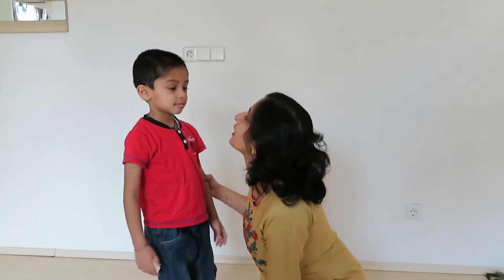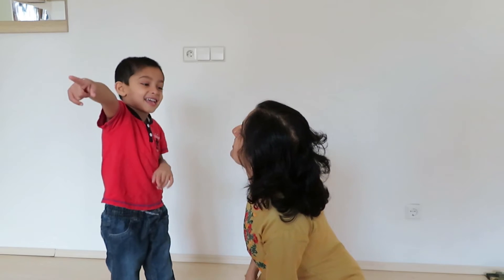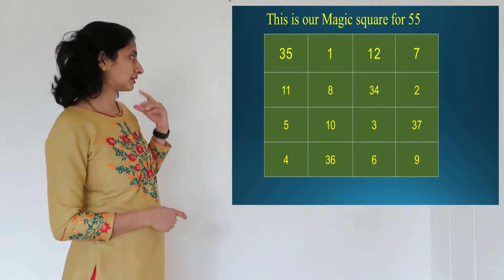Let me take one example. Which number shall I take? Okay, I will ask my son for a random number of his choice. Atri, come here. Please, tell me one number. Which number do you like? 55. So my son wants a magic square for the number 55. Let me create a magic square for the number 55.